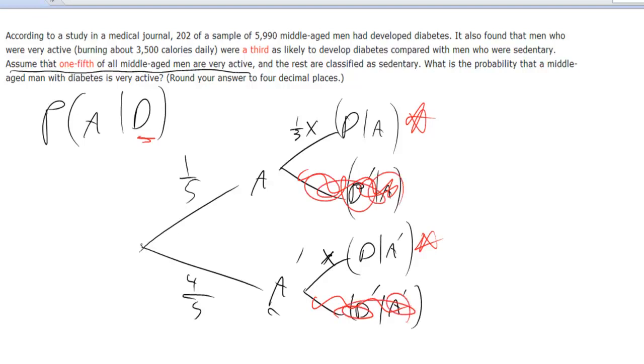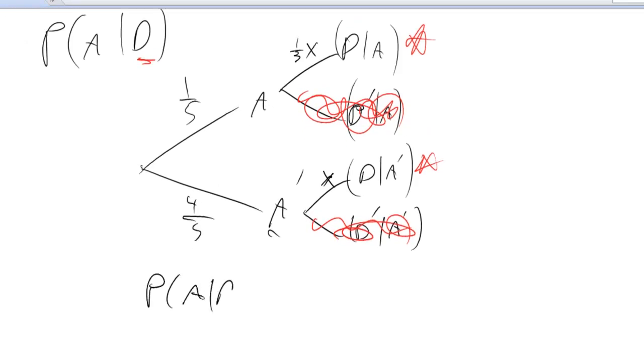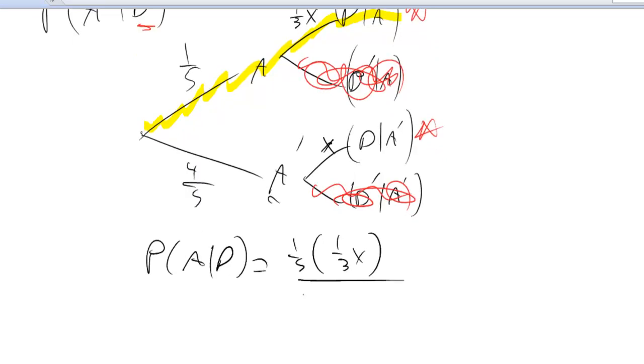So now we just use our Bayes theorem, which says the probability of A given D is equal to—all right, so now the desired branch would be the one that passes through A. So there's our desired branch, so that's our numerator, desired outcomes: one-fifth times one-third X. Now our denominator again is that same branch, one-fifth times one-third X, plus now we want the undesired branch, so that's going to be down here. So that's four-fifths times X.